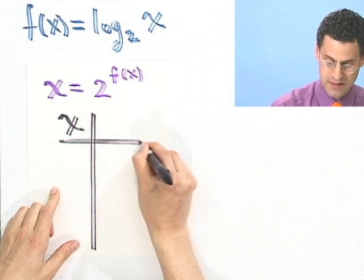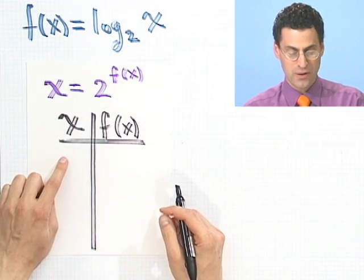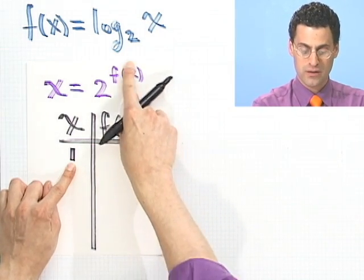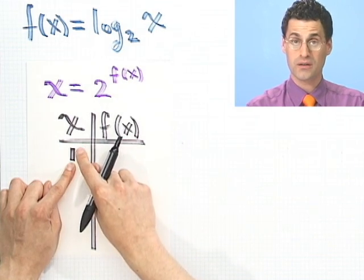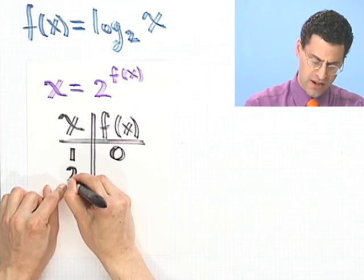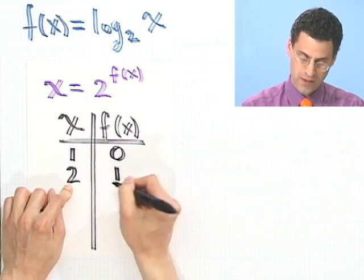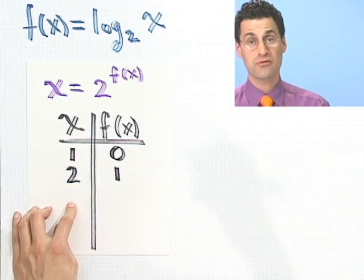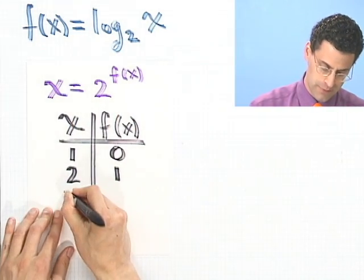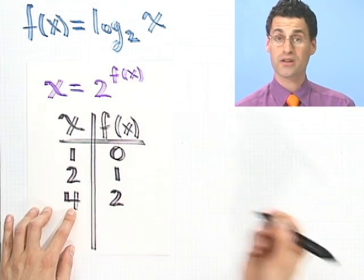It will help you pick some easy values to plug in for x. For example, what if I put in a 1 for x? Then what power of 2 will give me 1? Well, the answer is 0. What if I put in a 2 for x? 2 to what power is 2? Well, that's 1. If I put in 4, that value must be 2, because 2 squared is 4.